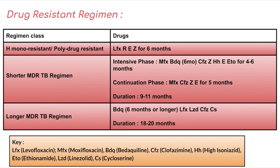For isoniazid mono-resistant or poly-drug resistant TB (where rifampicin is not resistant), the regimen is levofloxacin, rifampicin, ethambutol, and pyrazinamide for six months. For MDR-TB, there is a shorter regimen with two phases: an intensive phase of four to six months and a continuation phase of five months — total nine to eleven months. The intensive phase uses moxifloxacin, bedaquiline (for six months), clofazimine, pyrazinamide, high-dose isoniazid, ethambutol, and ethionamide. Continuation uses moxifloxacin, clofazimine, pyrazinamide, and ethambutol.